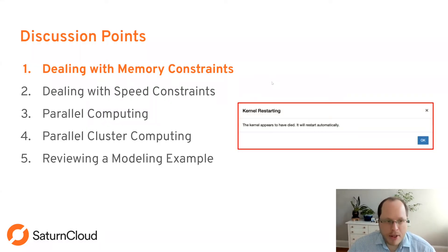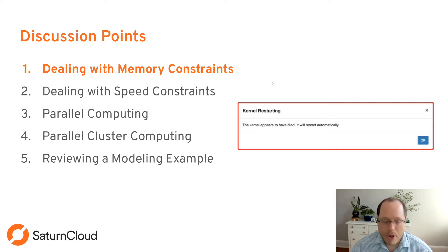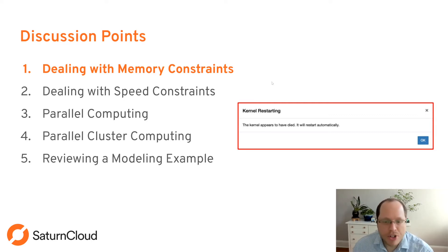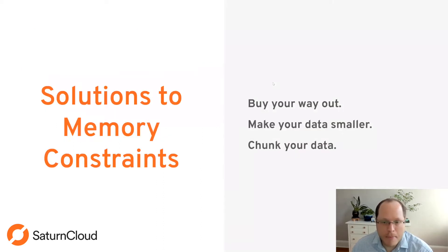The first thing you'll deal with when moving into larger datasets are memory constraints. These can be tricky — often you'll just get an error message saying the kernel is restarting in Jupyter, or a CUDA memory error. Basically, you've tried to put more information into RAM than will fit in the machine. We'll cover several strategies: buying your way out by getting a larger machine, making your data smaller so it fits in RAM, and chunking your data into smaller bits, analyzing them, and combining the results.